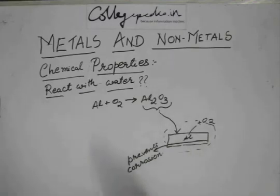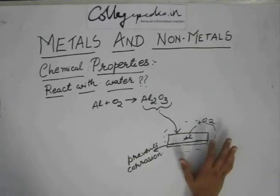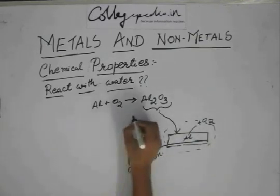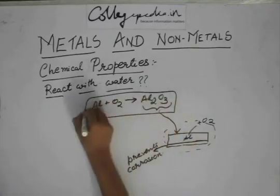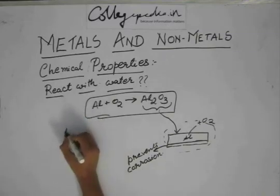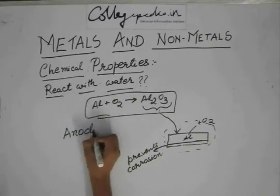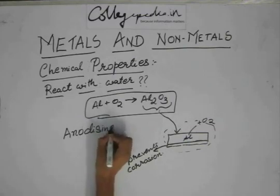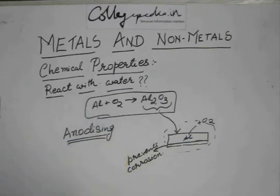This process, if done not naturally but through ways like electrolysis, this process of covering the aluminum with its own oxide to protect it is known as anodizing. This anodizing term refers only to aluminum, not for any other metal.